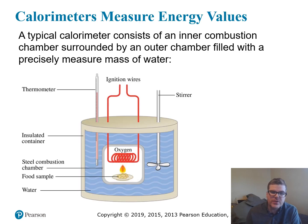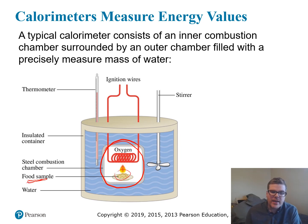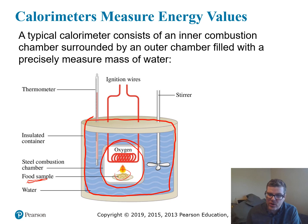This is a rough schematic of a typical calorimeter. Most consist of an inner chamber — the sample chamber or combustion chamber — where you place the substance whose energy content you want to measure. In this case we'll say it's a food sample. This inner chamber is surrounded by an outer chamber filled with a very precise mass of water, which will become important later.